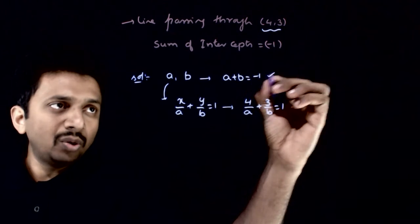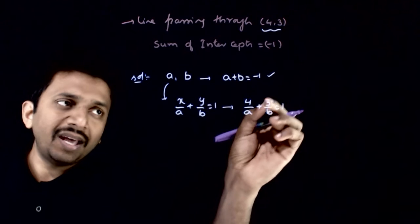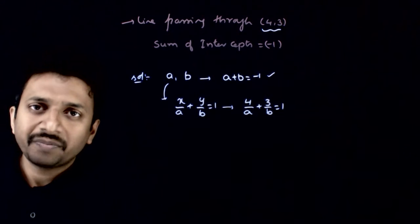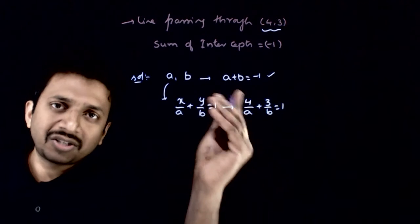So you have two equations: a plus b is equal to minus 1 and 4 by a plus 3 by b is equal to 1. If you solve these two equations, you should be able to get a and b, hence the line. Let us try to solve this.